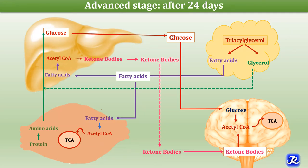In the advanced stage of starvation, the liver continues to synthesize glucose and ketone bodies. Ketone bodies are now utilized primarily by the brain, meeting about a quarter of its energy needs. Other tissues like muscle, heart, and kidney, which were utilizing ketone bodies in the intermediate stage, now spare ketone bodies for the brain and switch to using fatty acids as their source of energy.